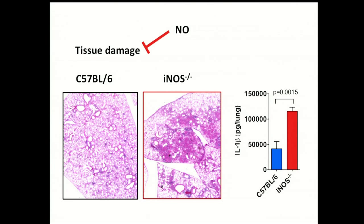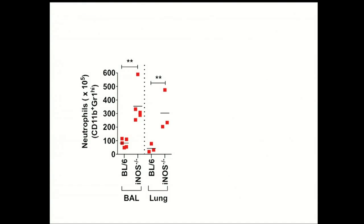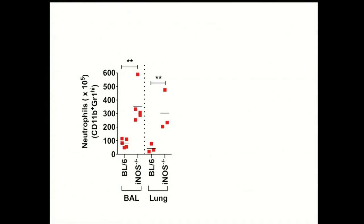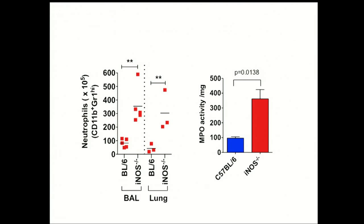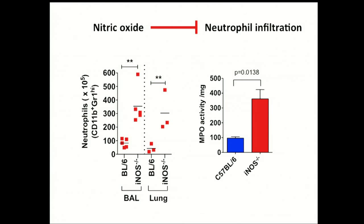We then measured IL-1 beta in this condition and found that iNOS knockout mice have more IL-1 beta compared to wild type. We conclude that nitric oxide can also block IL-1. We then measured neutrophil infiltration into the lungs in dissociated lung tissue as well as in the airways as a measure of tissue damage, and found that iNOS knockout mice have more neutrophils. The lung homogenates also have more myeloperoxidase activity, which is a key neutrophil enzyme. We conclude that nitric oxide can also block neutrophilic infiltration.